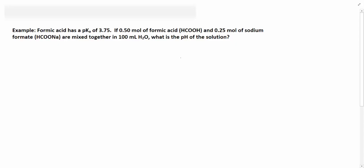The first thing to recognize is that we have a weak acid, formic acid, and its conjugate base, sodium formate. So sodium formate is HCOO- and Na+, but this sodium cation here is just a spectator ion, so we can ignore it.